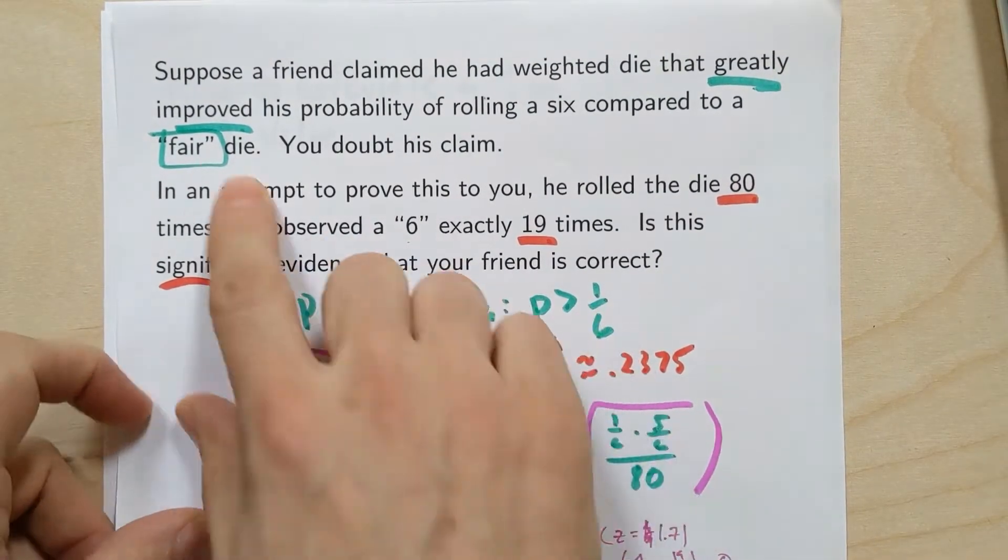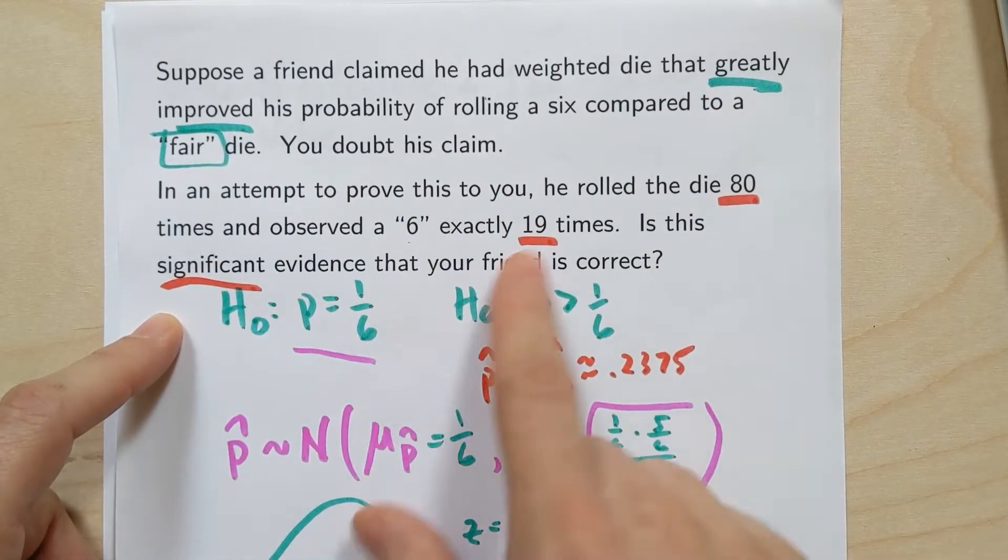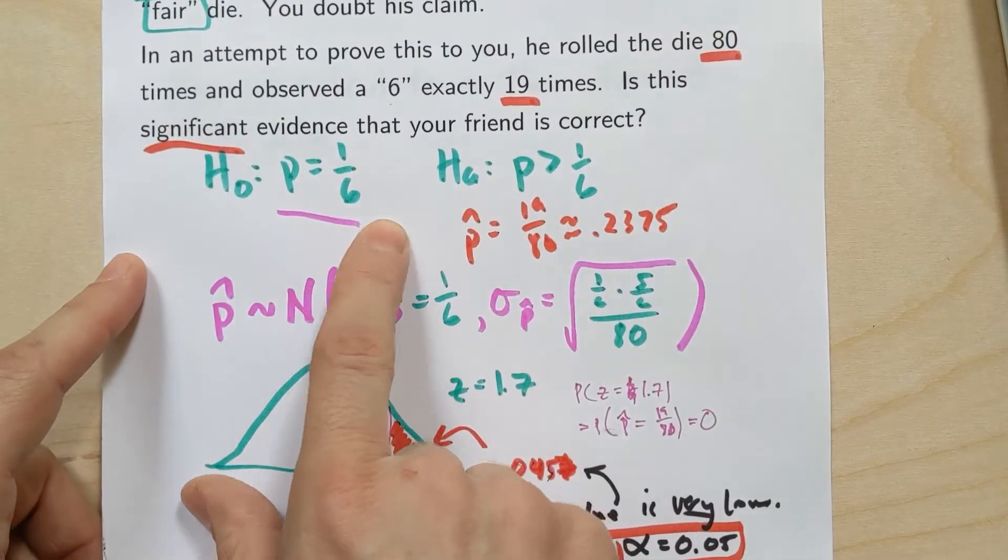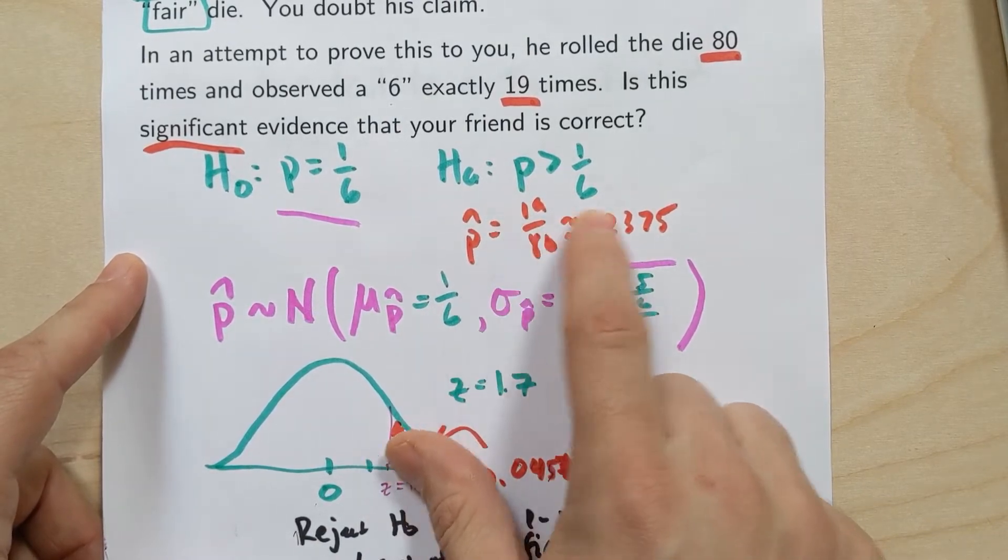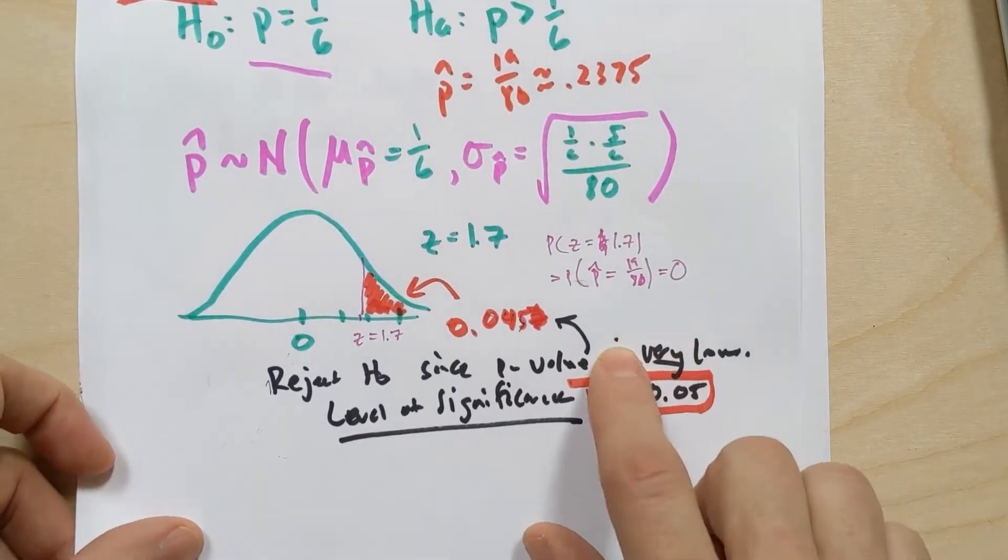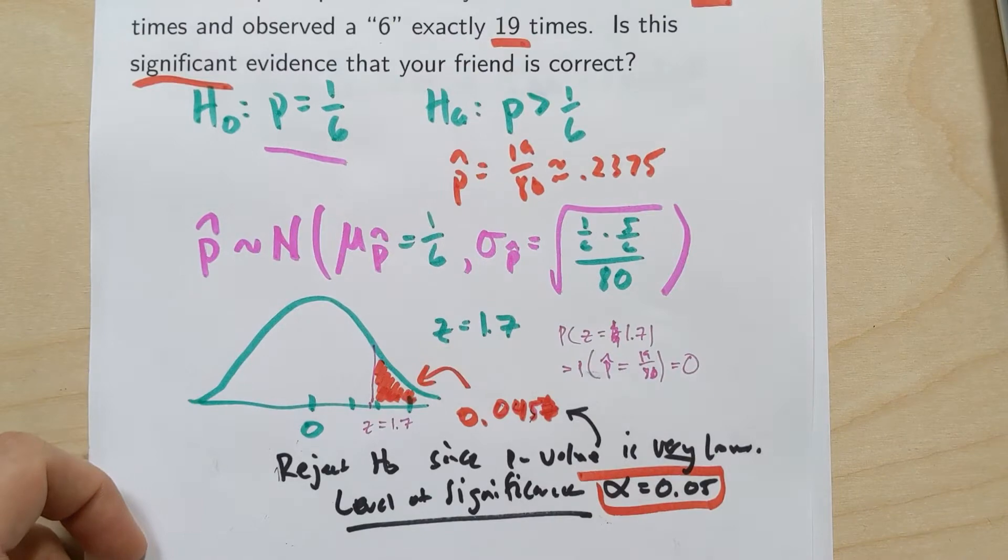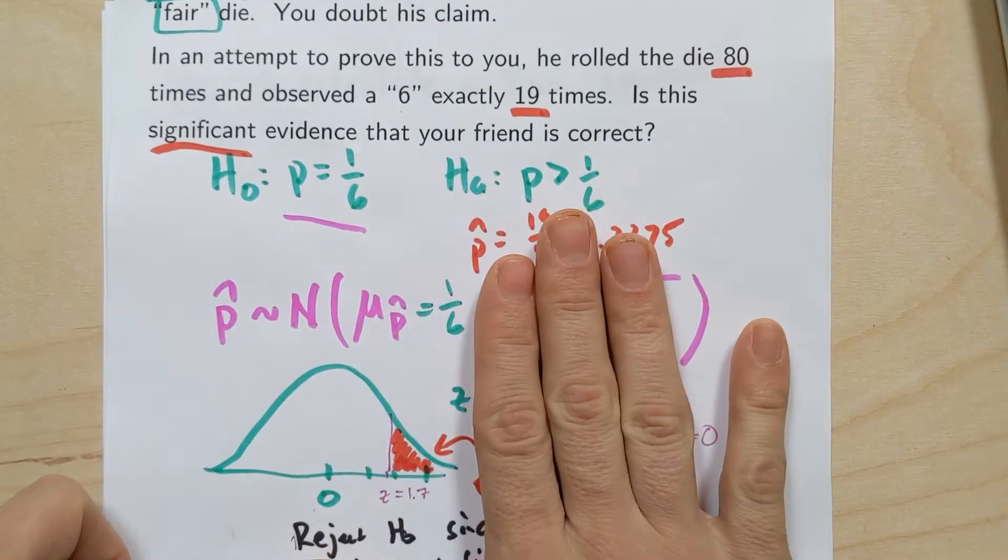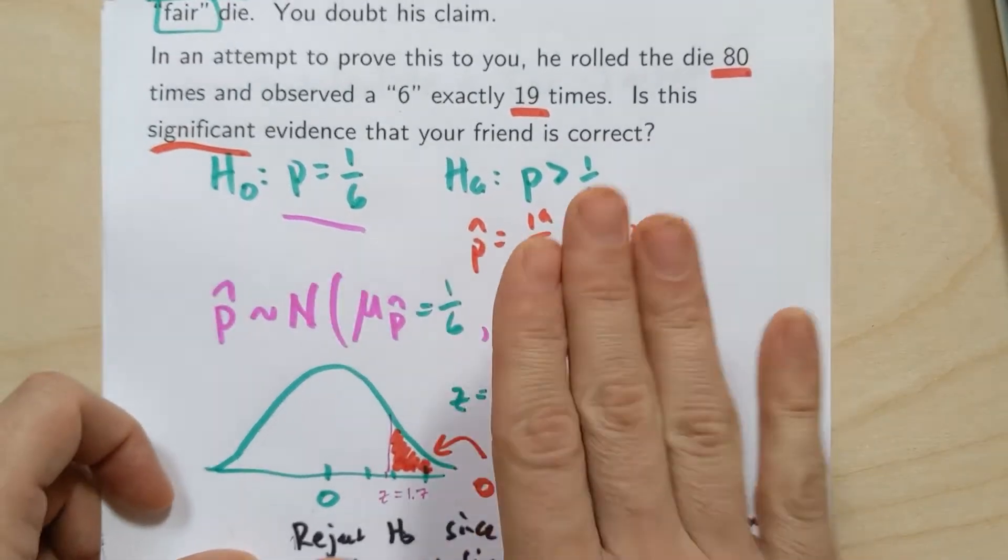If you remember our last example, I had this friend who claimed he had a die that greatly improved his probability of rolling a six. We did a quick significance test and calculated a p-value. We assumed that it was a normal fair die and tried to prove that he actually had higher chance than a fair die to roll a six. We calculated a p-value of just about 4.6%, which since it was lower than our level of significance, 5%, we rejected the null hypothesis and concluded that we do have evidence that this friend has a die with a chance of getting a six that's greater than one-sixth, greater than a fair die.